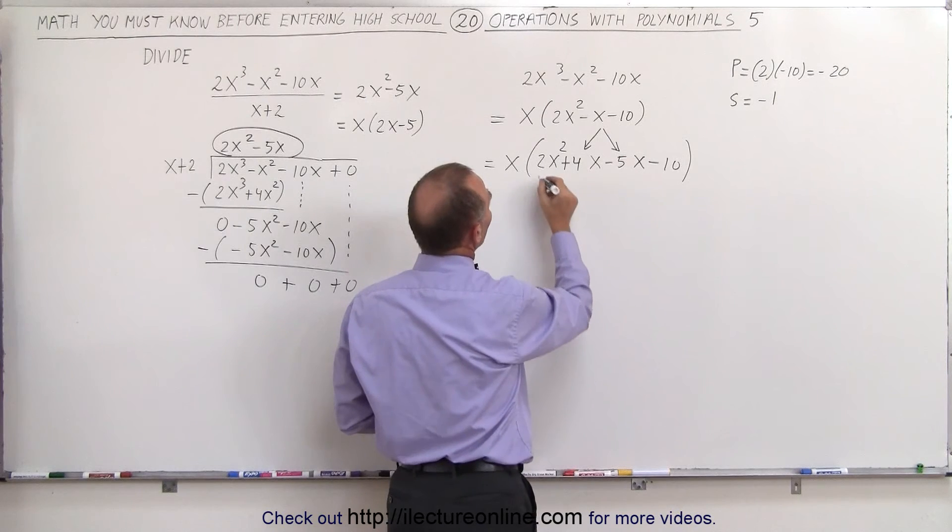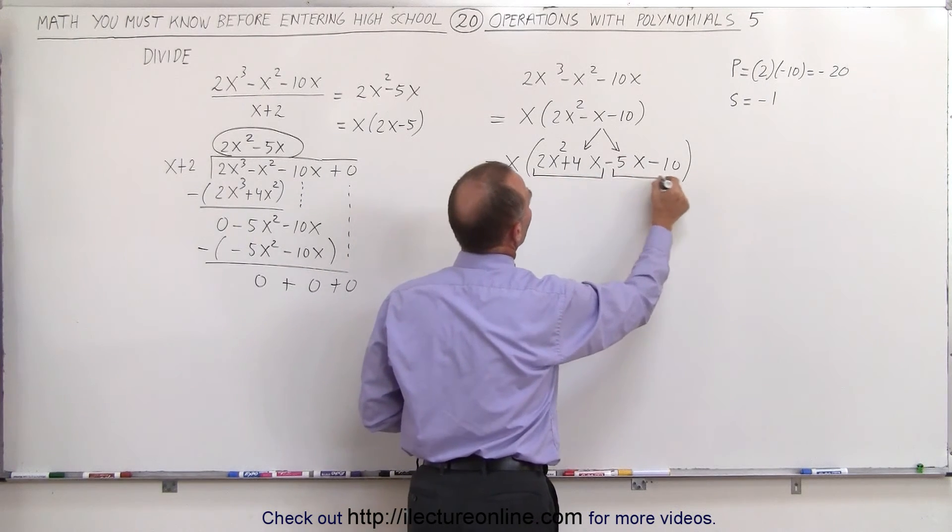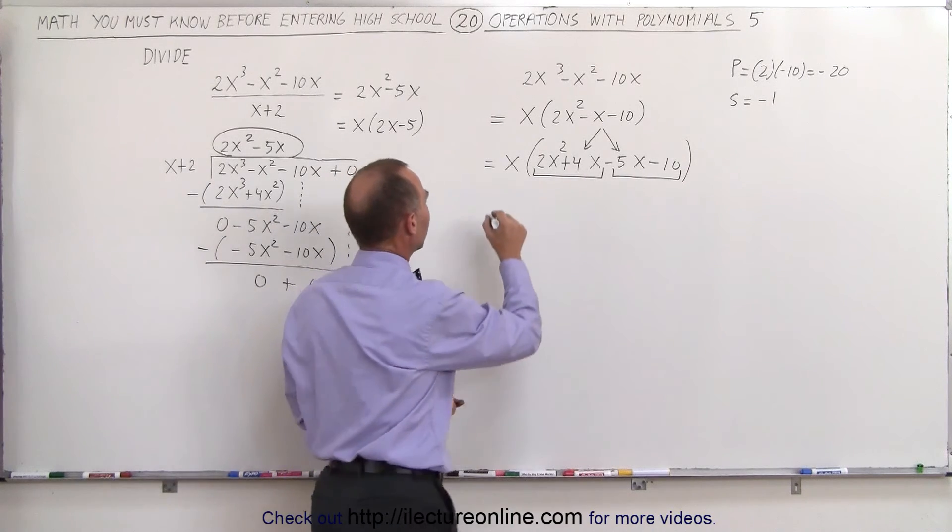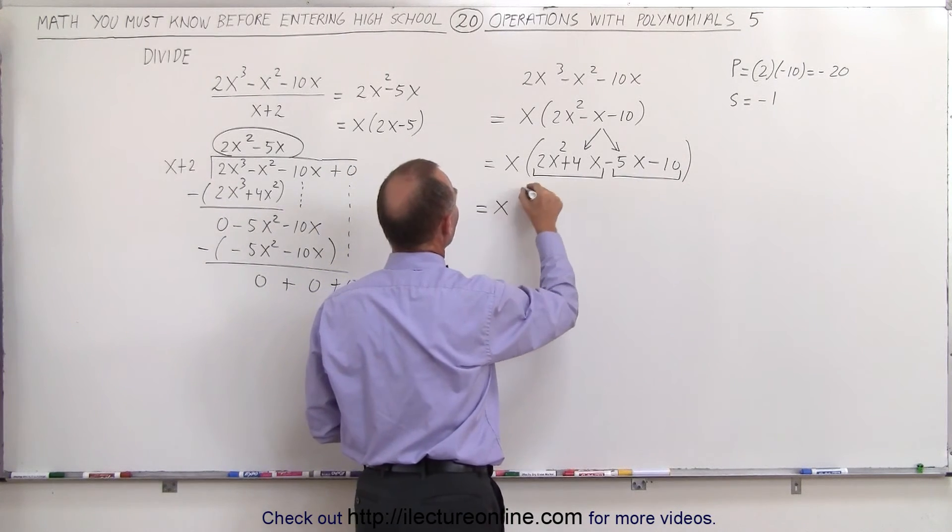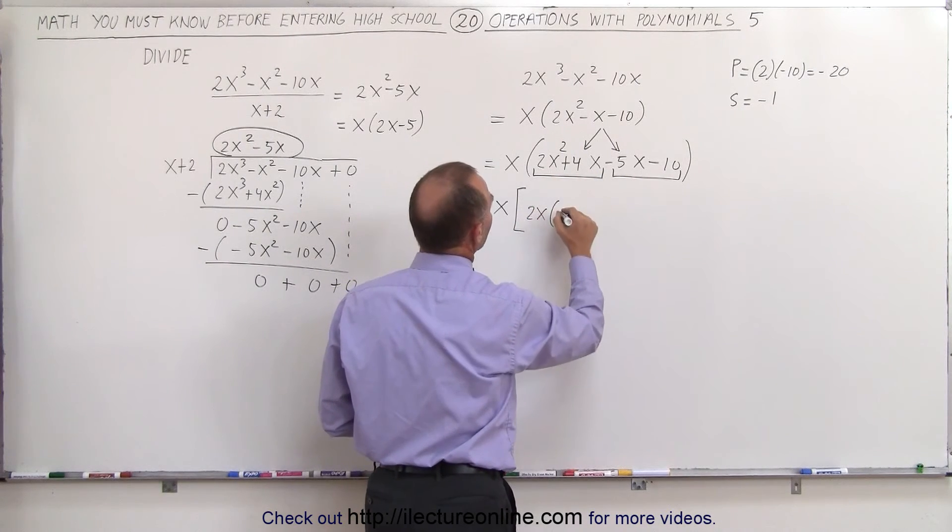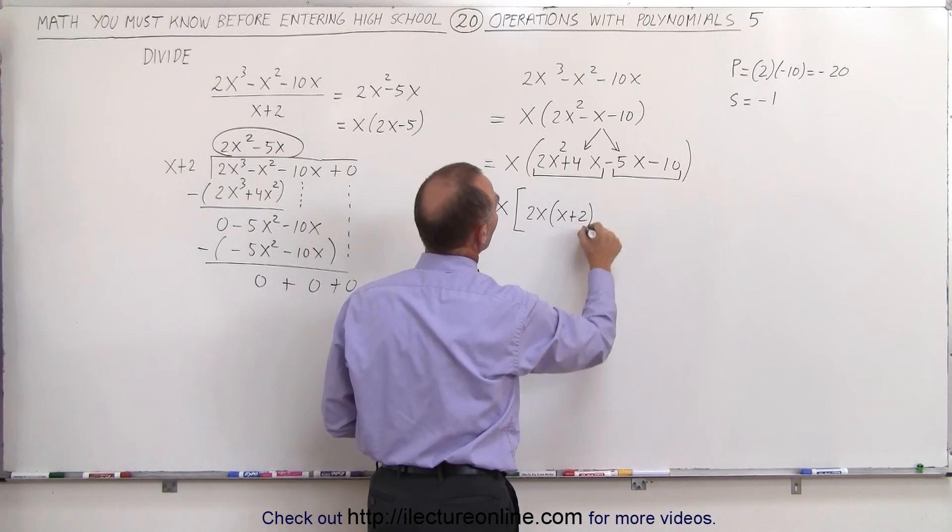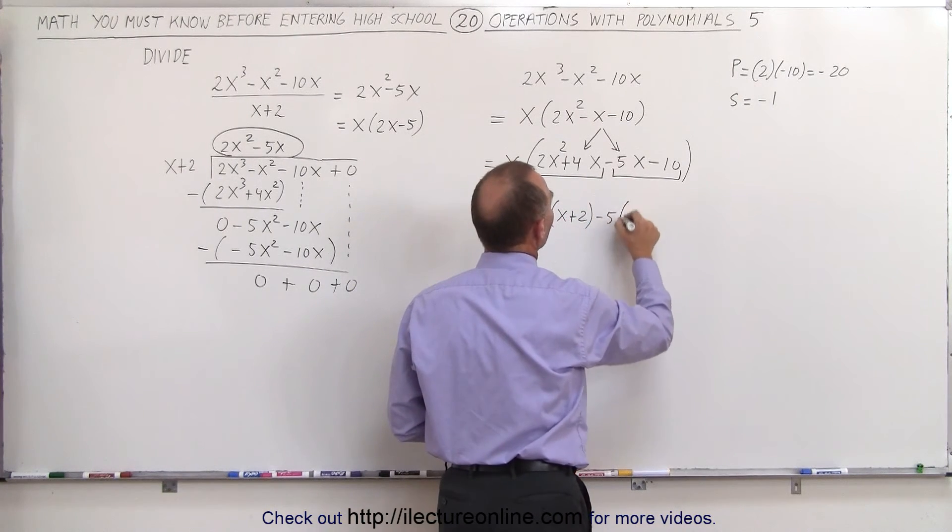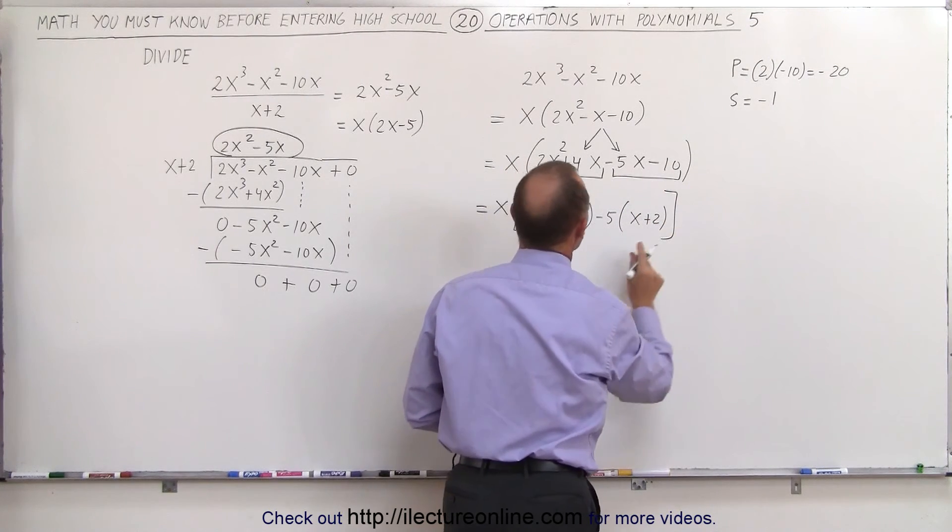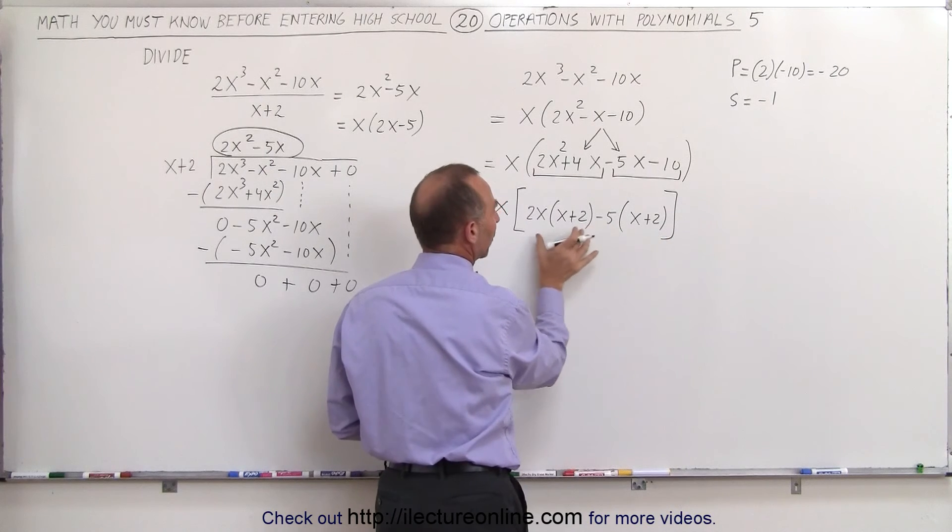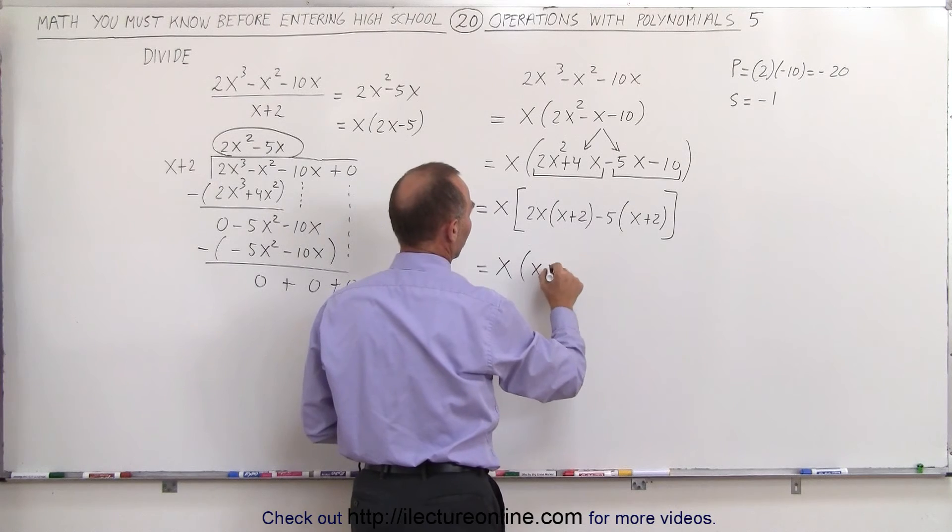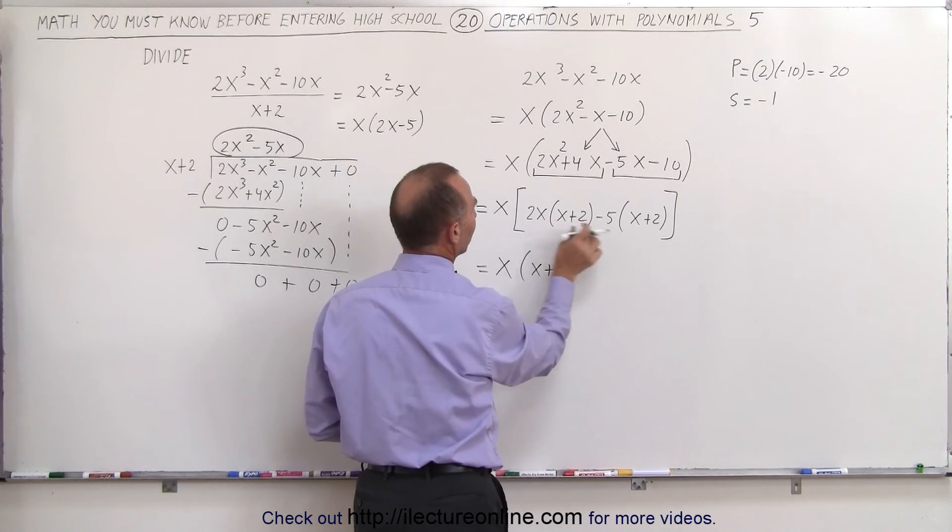Now I'm going to group these two together. What is common in each of those two groups? I can say that this is equal to x times, what's common here would be 2x and I'm left with x + 2, and here I can factor out a -5 and I'm left with x + 2. From these two terms I can see that x + 2 is common, so this is written as x times (x + 2) and I'm left with (2x - 5).